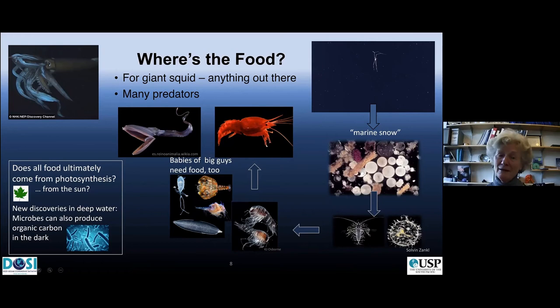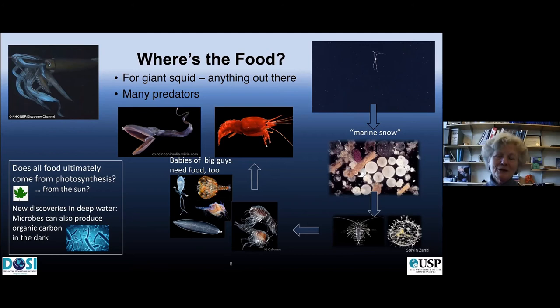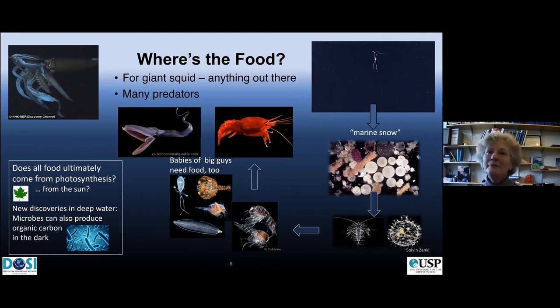Most food ultimately comes from sunlight production through photosynthesis and falls down. But one of the new discoveries in deep water by microbial biologists is that there are bacteria that can take carbon dioxide in the water and convert it into organic carbon using chemical energy, not light energy. So food production is possible on a smaller scale in the deep sea through chemosynthesis.